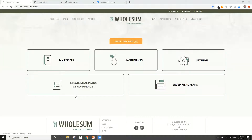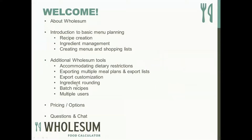There are a number of additional features you can opt into or out of to match your operations. We'll cover: accommodating dietary restrictions, making exports more powerful by aggregating multiple groups or filtering by store or department, ingredient rounding, batch recipes, and multiple users. These are used less frequently but can be really powerful depending on your operations.